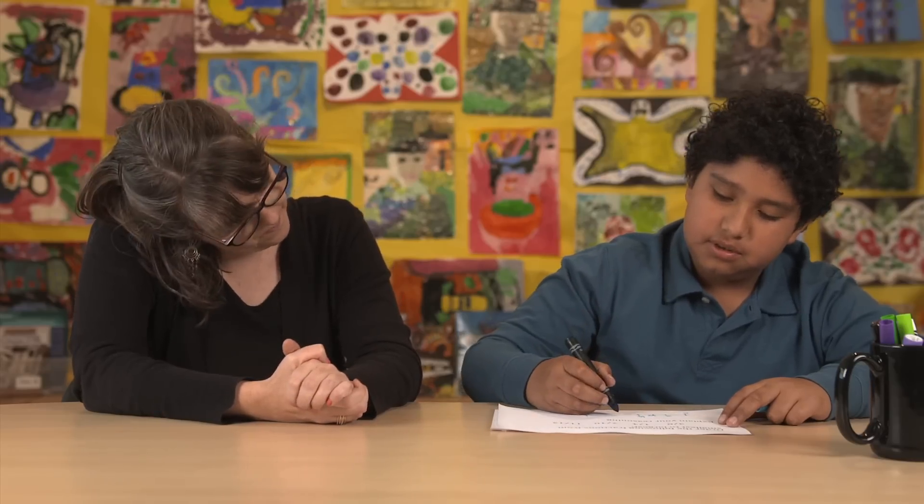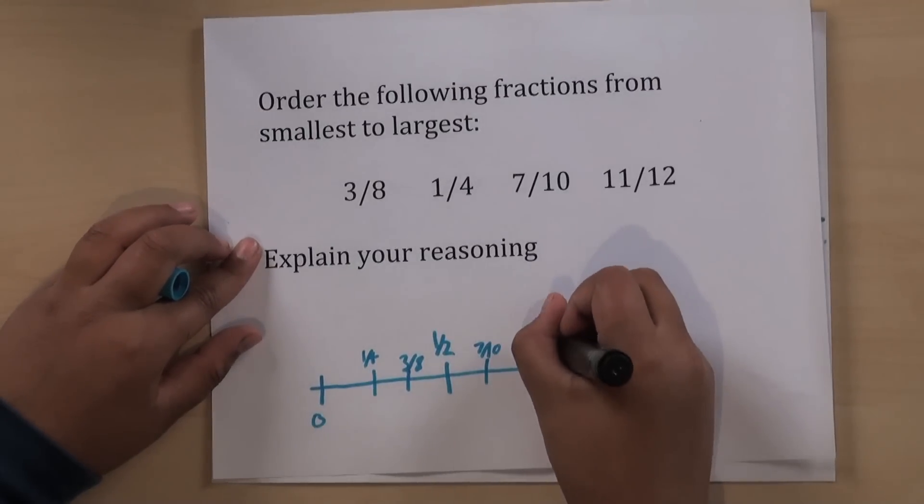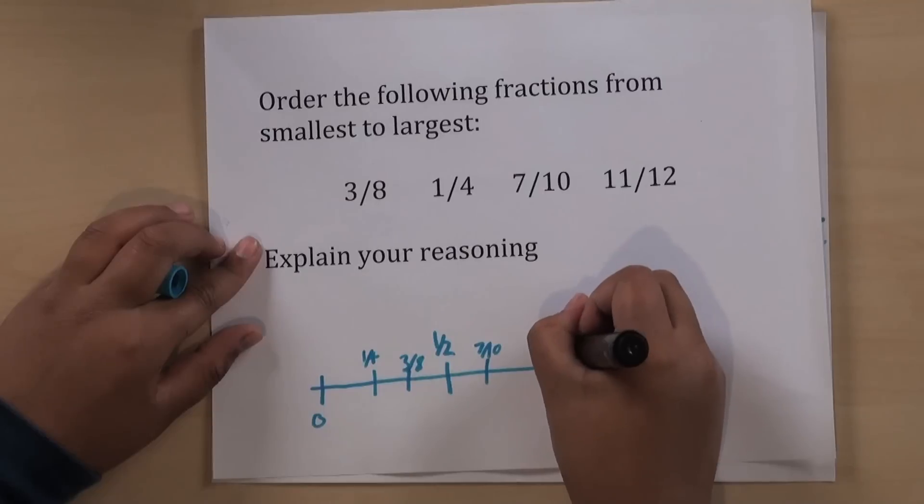Seven-tenths would be around here because five-tenths would be half. And eleven-twelfths would be here because you just need one more twelfth to get to one. And six-twelfths would be half. So eleven-twelfths.